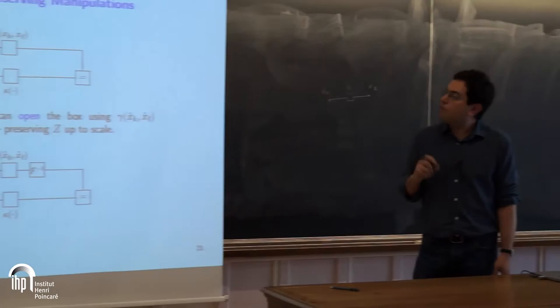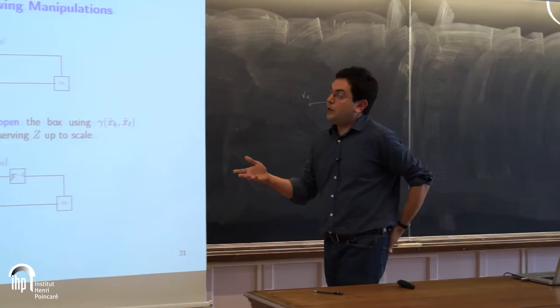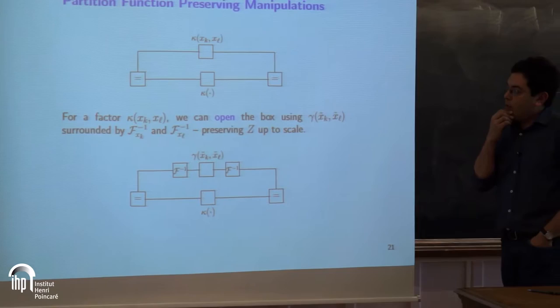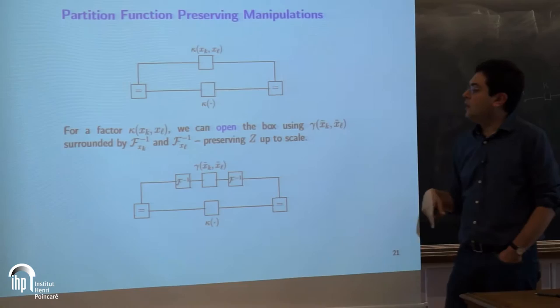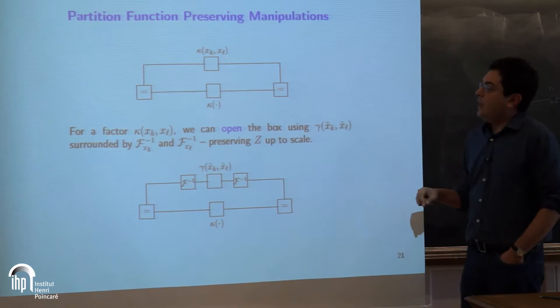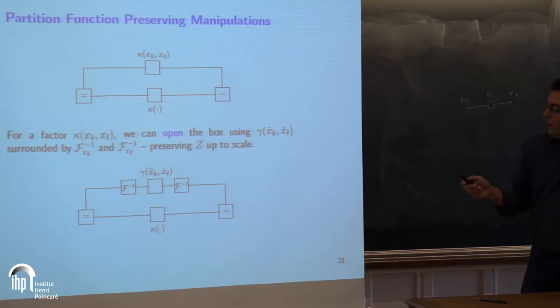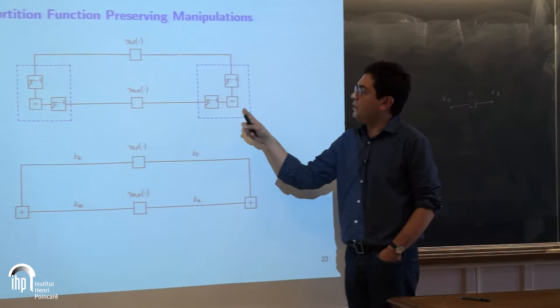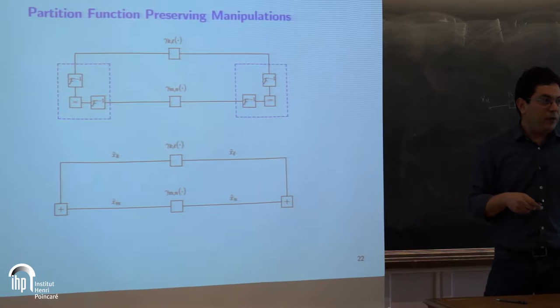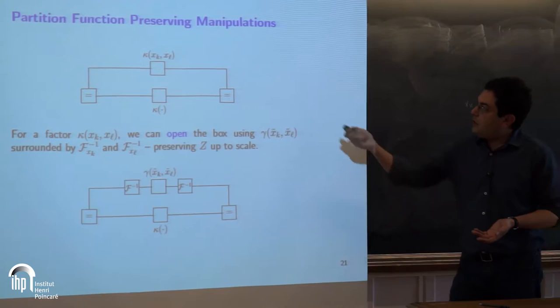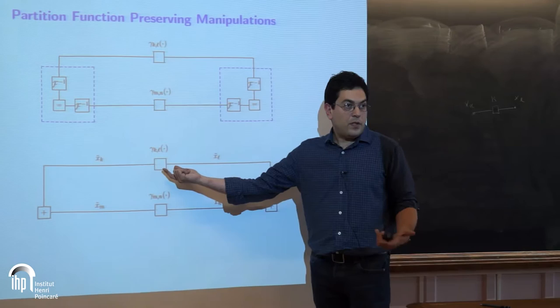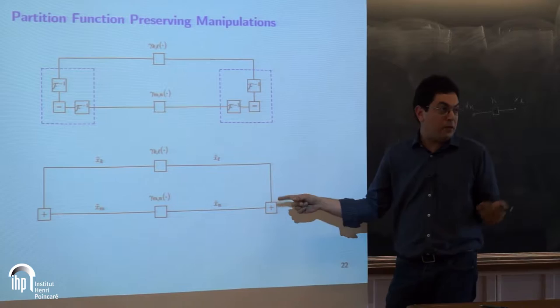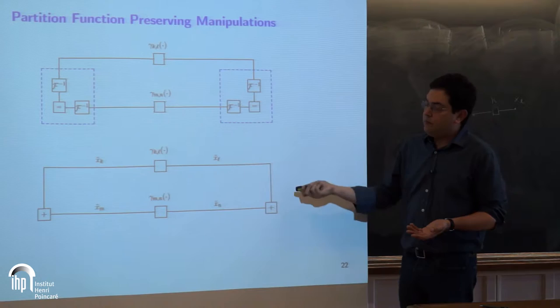I have a factor graph with factors kappa related to the Potts model. I can replace each factor with the Fourier transform of this kernel, which I denote by gamma, surrounded by inverse Fourier transforms — this will not change the partition function. I then merge the inverse Fourier transforms with the equality constraints and close the box; again this will not change the partition function up to scale. From the original graph you go to the dual graph, with 2D discrete Fourier transforms of the kernels and inverse Fourier transforms of the equalities, which I denote by the plus factor.